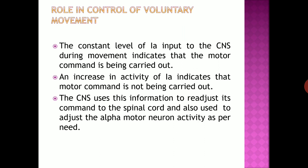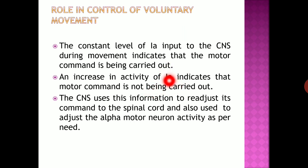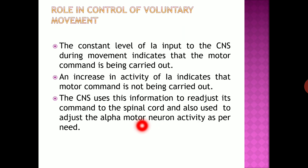The role in control of voluntary movements: a constant level of primary afferent 1a input to the central nervous system during movement indicates that the motor command is being carried out. If there is increased activity of 1a afferents, it indicates the motor command is not being carried out. The CNS uses this information to readjust its command to the spinal cord and to adjust alpha motor neuron activity as per need during voluntary movement.